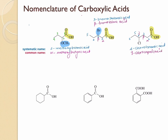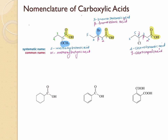Now let's look at examples where the carboxylic acid is directly attached to a ring structure. In that case, we add the name 'carboxylic acid' to the name of the actual compound. So cyclohexane with a carboxylic acid group attached is cyclohexanecarboxylic acid. Similarly, benzene with a carboxylic acid group is benzenecarboxylic acid. These are IUPAC names.